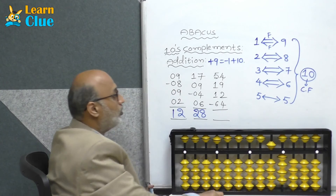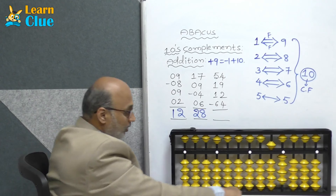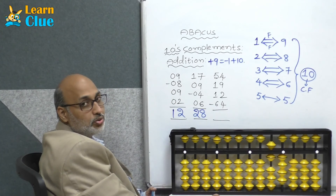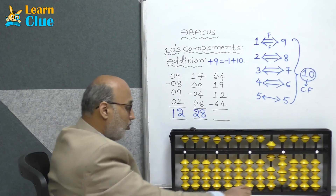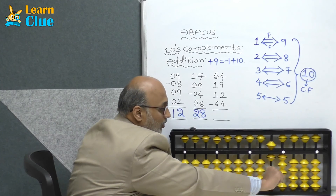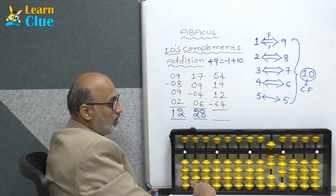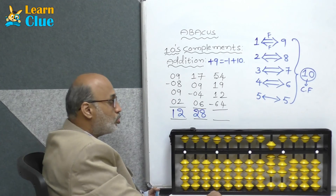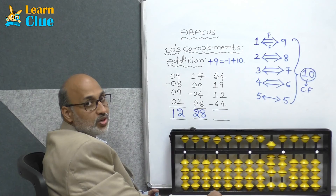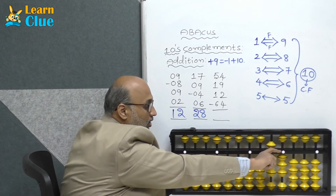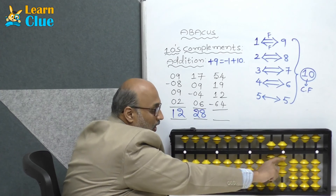Plus 19 — plus 10 plus 9. How to do 9? Who is the friend of 9? 1. So minus 1 plus 10. They are asking plus 12 — plus 10 plus 2. How to do plus 2? Think in 5s complements — plus 2 technique is nothing but plus 5 minus 3.